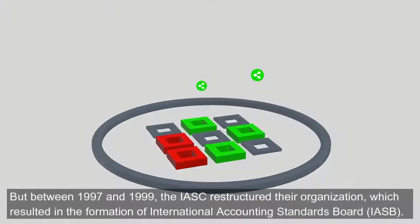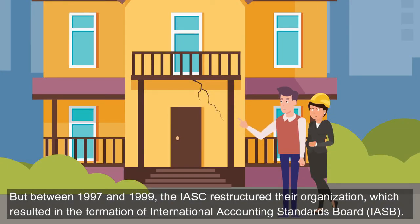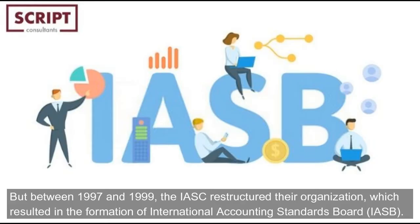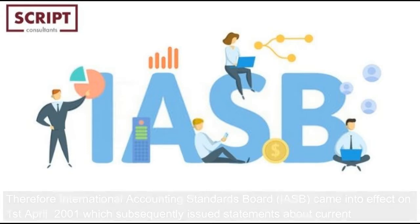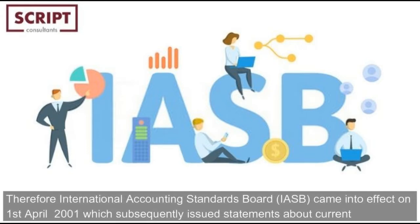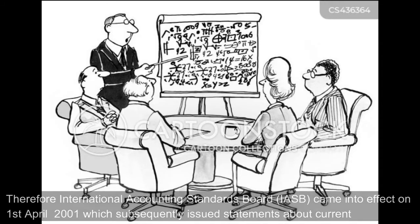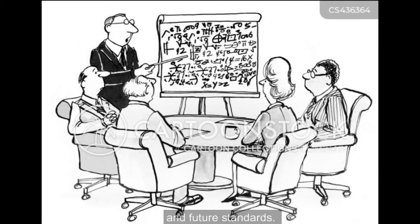Between 1997 and 1999, the IASC restructured their organization, which resulted in the formation of the International Accounting Standards Board. Therefore, the International Accounting Standards Board came into effect on 1st April 2001, which subsequently issued statements about current and future standards.